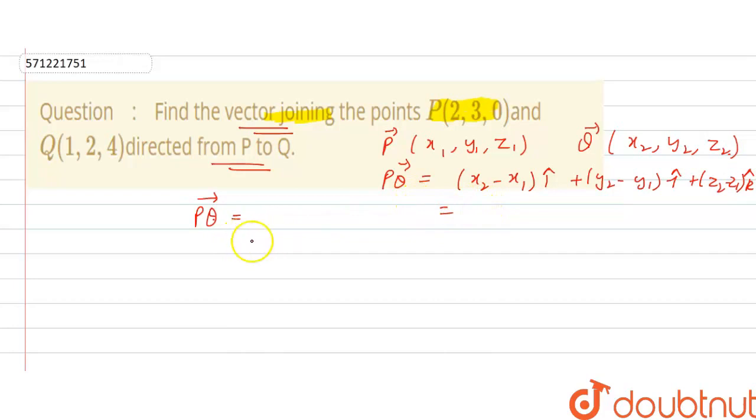Now, in this question, P points are 2, 3, 0, and Q points are 1, 2, 4.